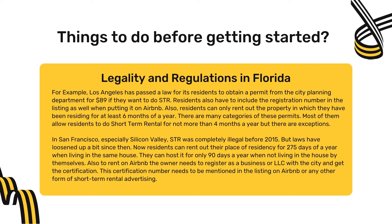There are many categories of these permits. Most allow residents to do short-term rental for not more than four months a year, with some exceptions. In San Francisco, especially Silicon Valley, short-term rental was completely illegal before 2015, but laws have loosened since then. Now residents can rent out their place of residency for up to 275 days a year when living in the same house, or only 90 days a year when not living there themselves.